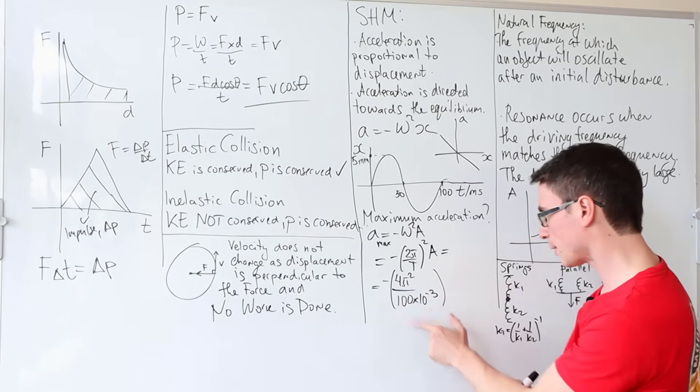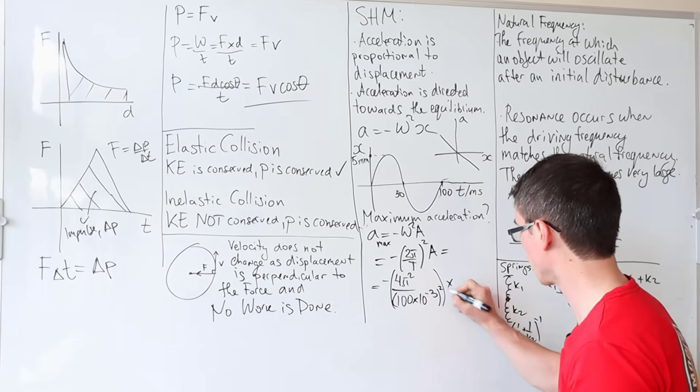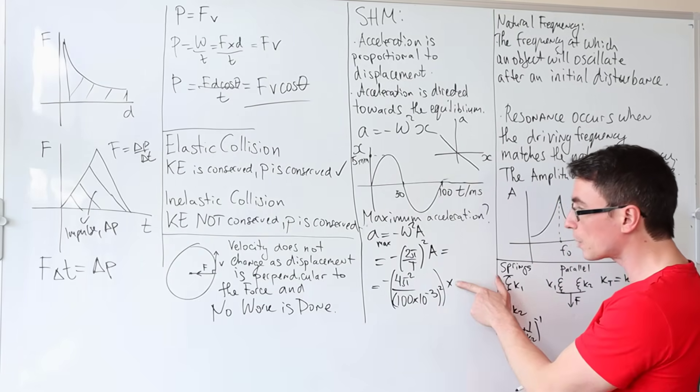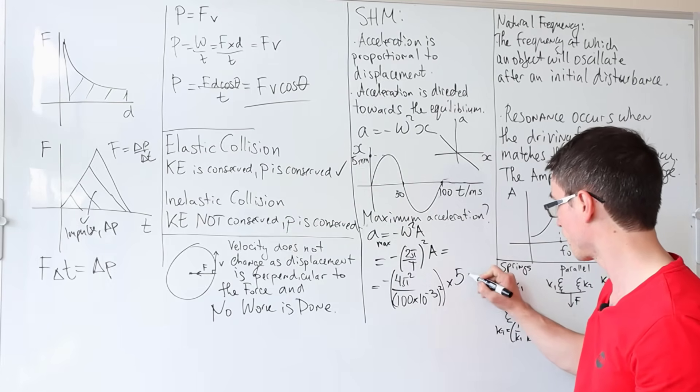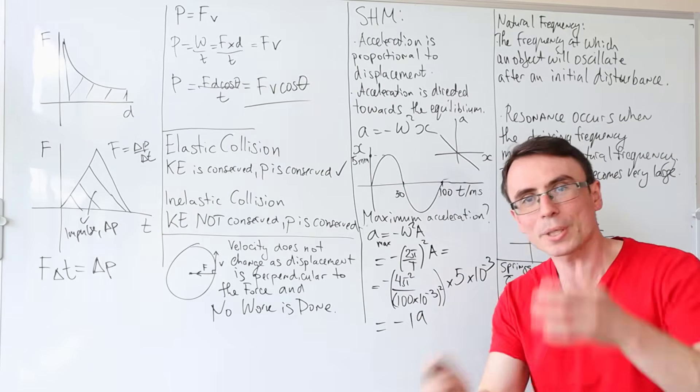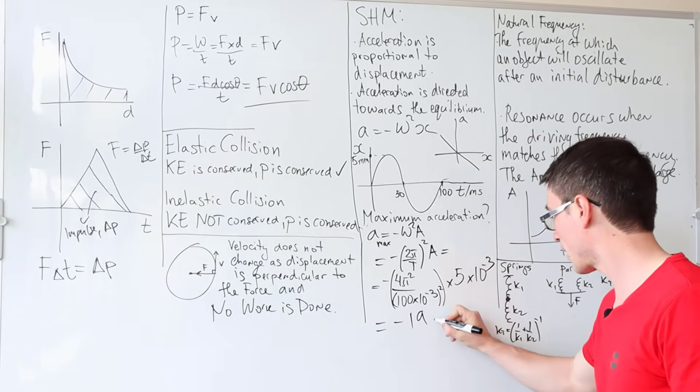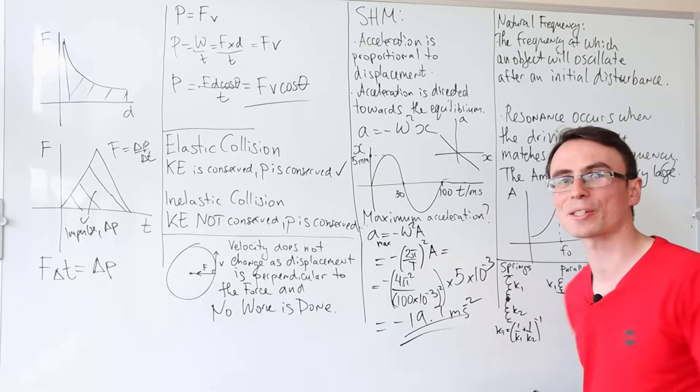So this will be 100 × 10⁻³. I've already squared the top, so I'm just going to square the bottom of this fraction. And then I'm going to multiply that by the amplitude, which is just 5 millimeters, i.e., 5 × 10⁻³. Putting this into the calculator, we get around 19.7 meters per second squared.